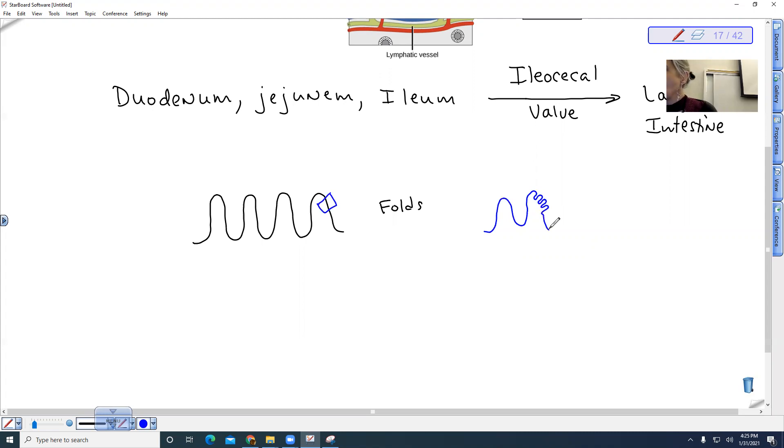So these finger-like extensions on the folds, these are called villi. Villi are only found in your small intestine. They function to increase the surface area over which nutrients can be absorbed.